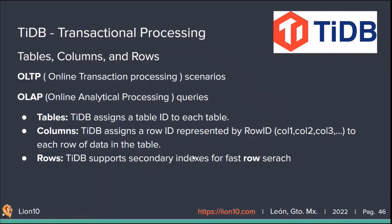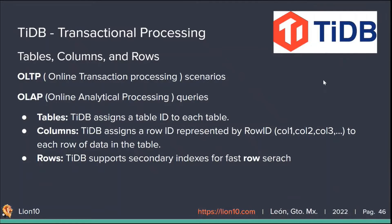TiDB supports both primary and secondary indexes for fast row search. The table portion is ideally kept locally within the same region. We can quickly scan through a table horizontally by ID — for example, to select column one and three by scanning the row ID. For row search, we use secondary indexes, which is a best practice to prevent full table scans.